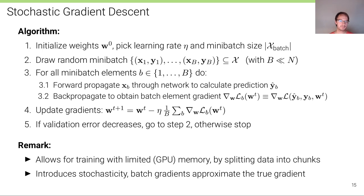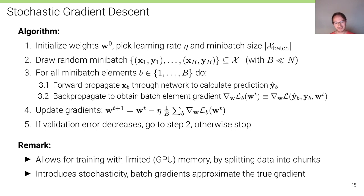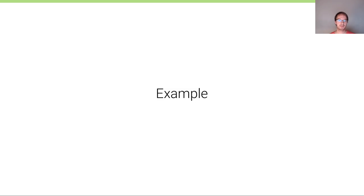This allows training with limited memory, which is typical when applying deep learning on hardware such as GPUs, which are limited to GPU memory — much smaller than standard RAM or disk. However, it also introduces stochasticity: the batch gradients approximate the true gradient.